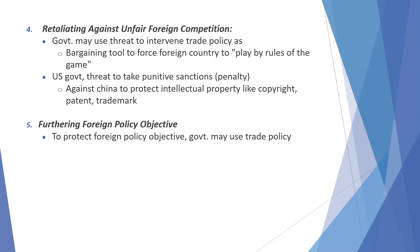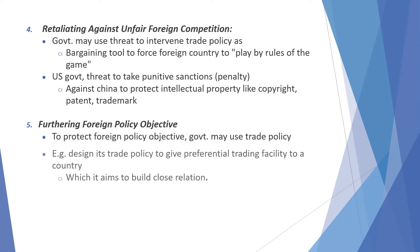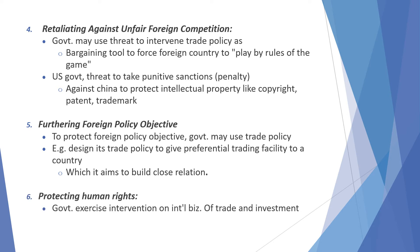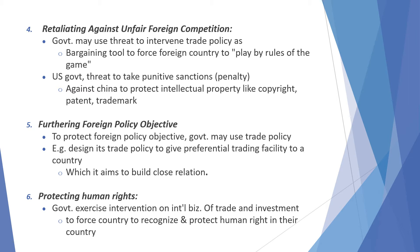Furthering foreign policy objectives — to protect foreign policy objectives, the government may use trade policy, for example designing its trade policy to give preferential trading facilities to a country which aims to build a close relation. Next is protecting human rights, where government intervention on trade and investment is used to force countries to recognize and protect human rights.